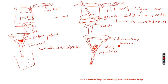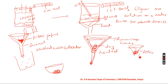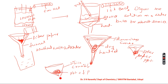Transfer the precipitate along with the filter paper into a previously weighed silica crucible. Heat it using a Bunsen burner until the filter paper is completely burnt off, then keep the precipitate red hot for about 15 minutes.